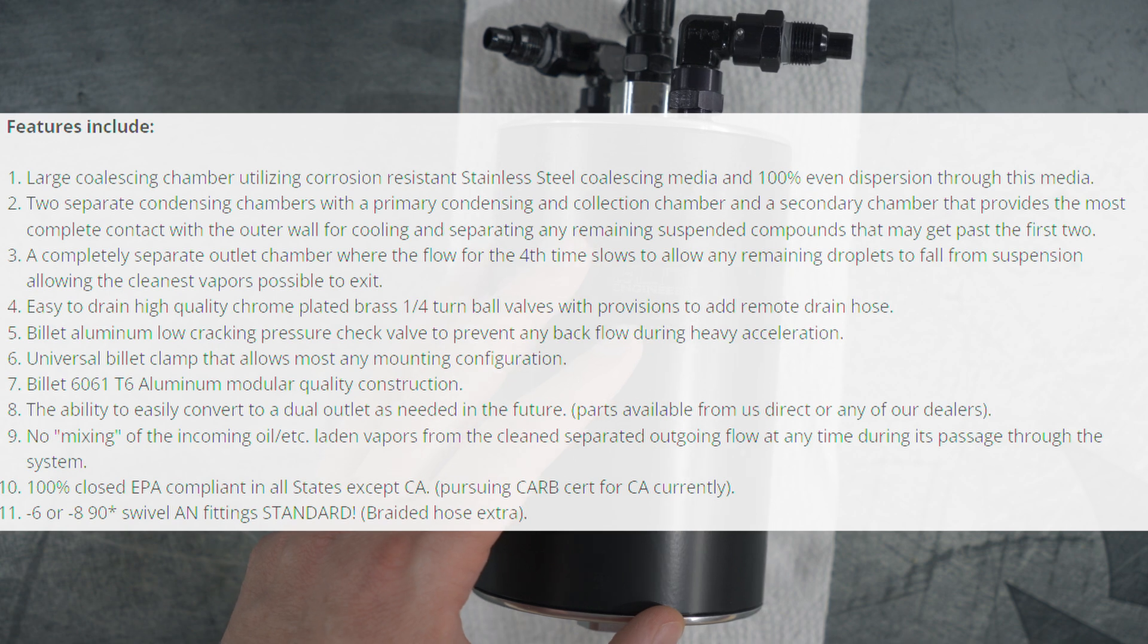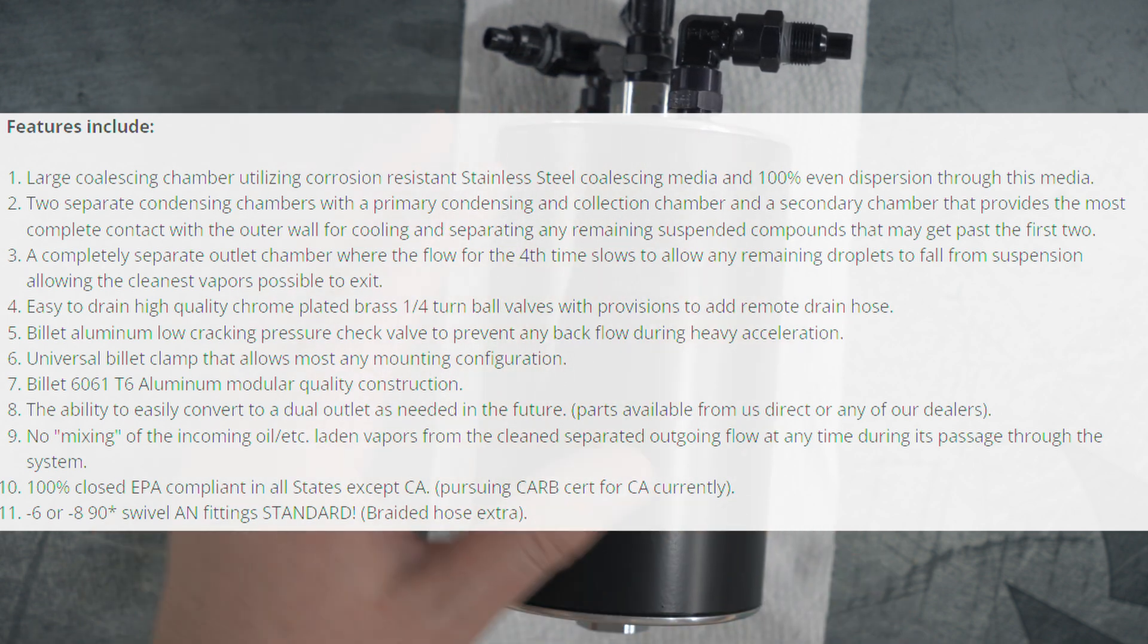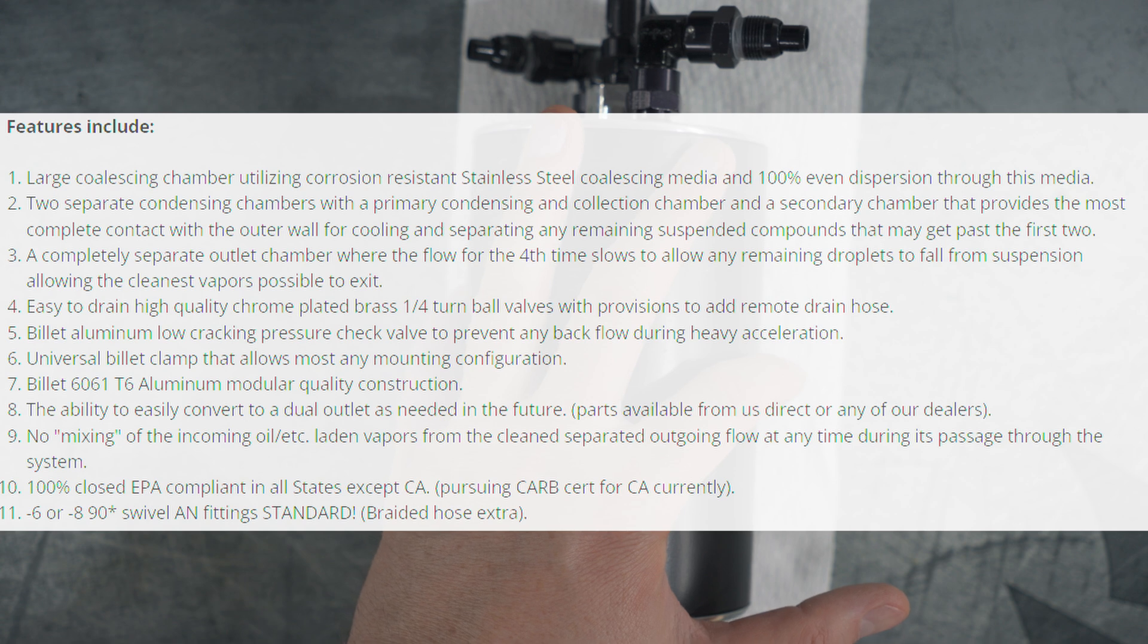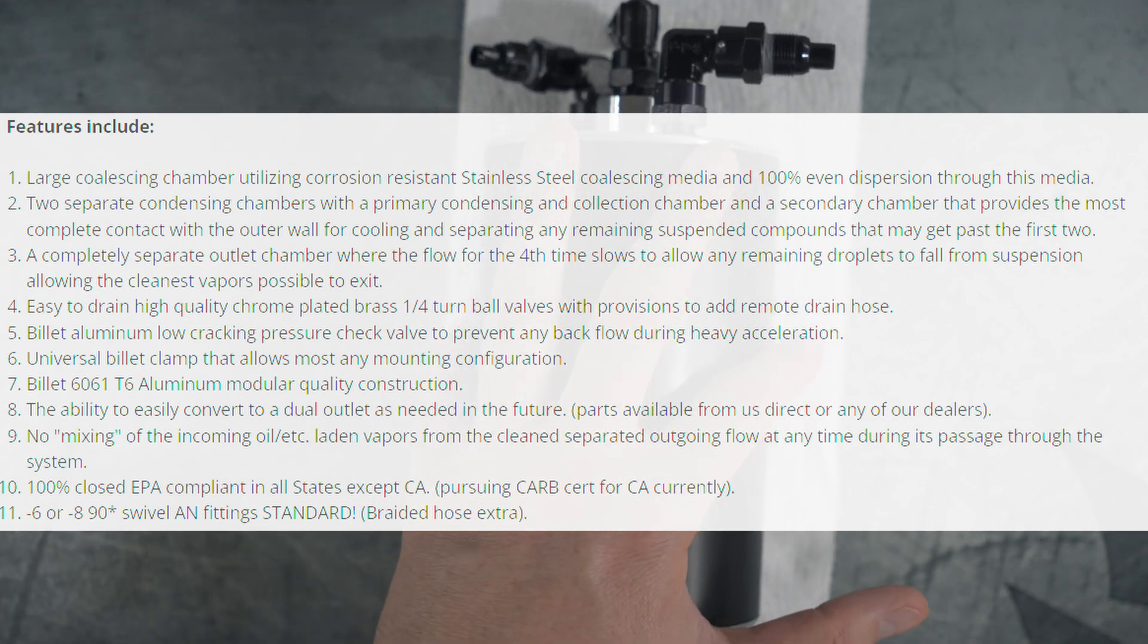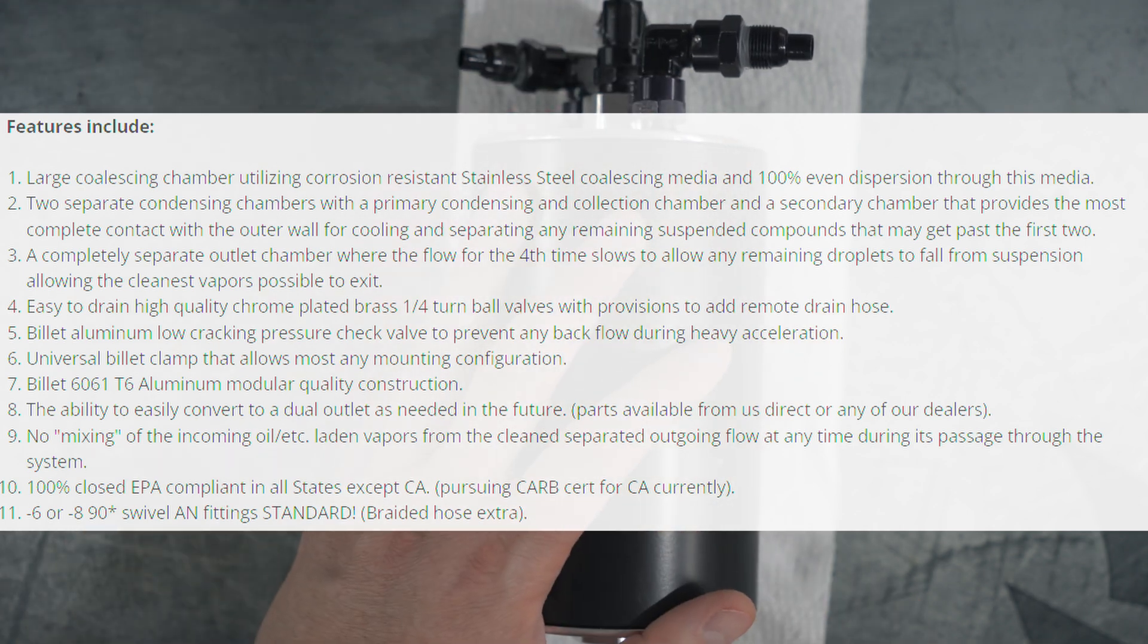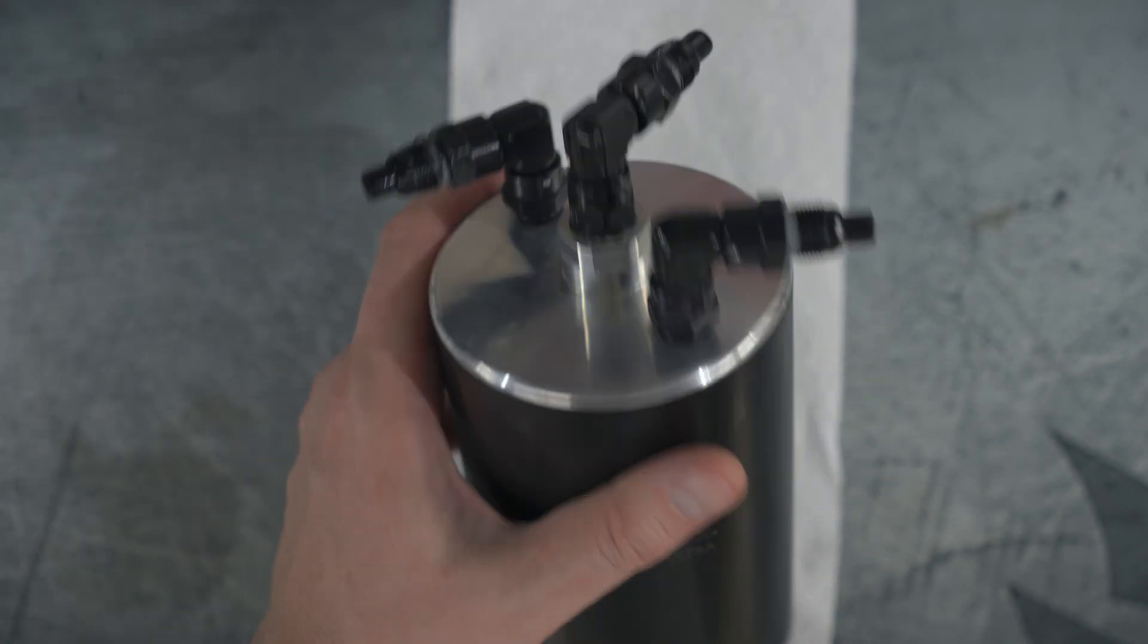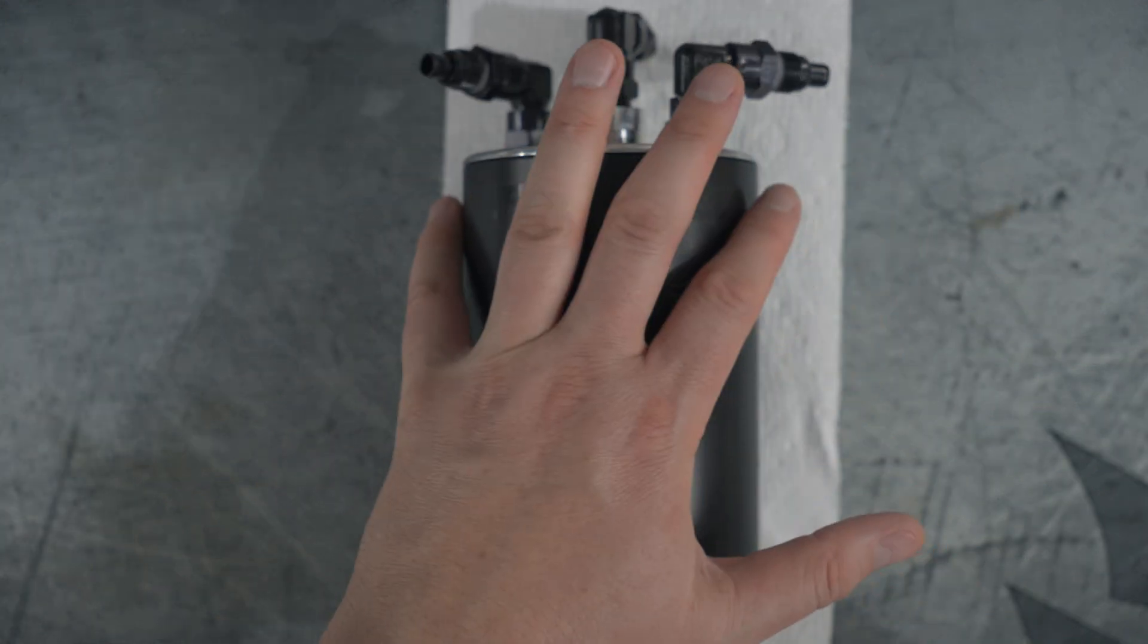There's no mixing of incoming oil vapors from the clean separated outgoing flow at any time during the passage to the system. So you're not going to get any kind of mixture and contaminants coming out back into your engine. You have 100 percent closed EPA compliant in all States, except for California. Of course, I guess they're pursuing CARB certification. I'm not sure the status of that, but it's completely compliant. It's authorized for use on track and other cases like that street, you shouldn't get any kind of issues running this versus an open element breather setup, which is definitely a huge advantage. And also you have these swiveling connections here. So it makes mounting your hoses and everything, fitting everything up super easy. And you can run it any kind of mounting solution that you want that works for you.